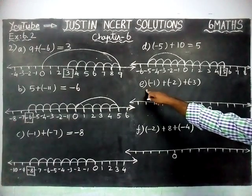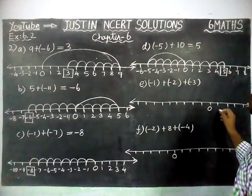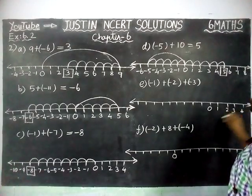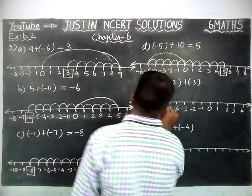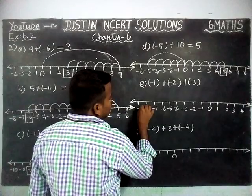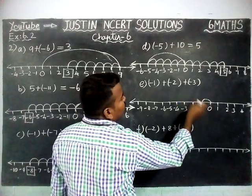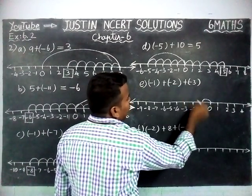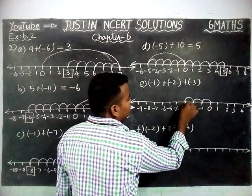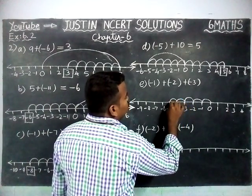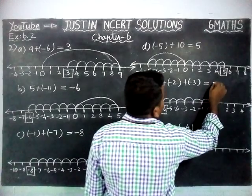Then part E: minus 1 plus minus 2 plus minus 3. From 0, right-hand side positive numbers 1 to 4, left-hand side negative numbers: minus 1 through minus 9. From 0 we move to minus 1. Then minus 2 — we move 2 steps left: 1, 2. Then minus 3 — again negative, so we move left 3 more steps: 1, 2, 3. We reached the number minus 6. So the answer for the given sum is equal to minus 6.